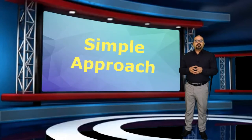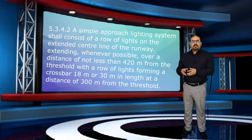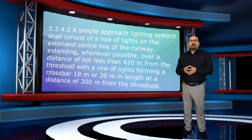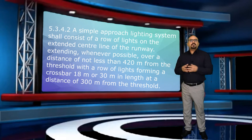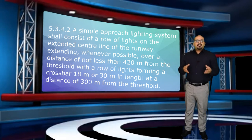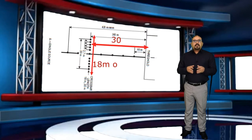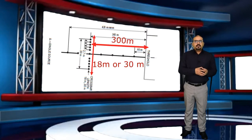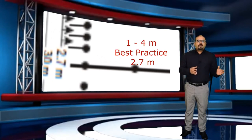Let's talk now about the simple approach lighting. The simple approach lighting shall consist of a row of lights on the extended line of the runway centerline, extending from the threshold up to 420 meters if applicable. It shall have a crossbar of lights at 300 meters distance from the threshold. This crossbar will be 18 or 30 meters in length, and the spacing between each light forming this crossbar will be 1 to 4 meters.